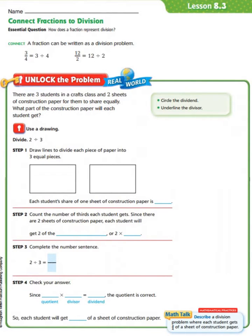Let's start by using a drawing. We're going to divide 2 by 3 for 3 students. The first step is to draw lines to divide each piece of paper into 3 equal pieces. When dividing into thirds, we need to make 2 cuts: 1, 2.